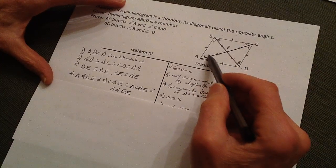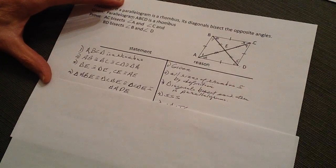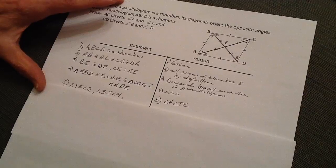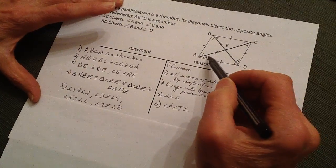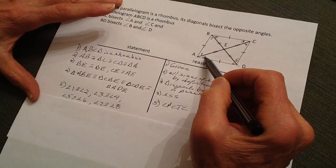So these are all done by side, side, side, and we've got the three sides congruent, and therefore the angles are congruent because this angle and this angle are corresponding angles.